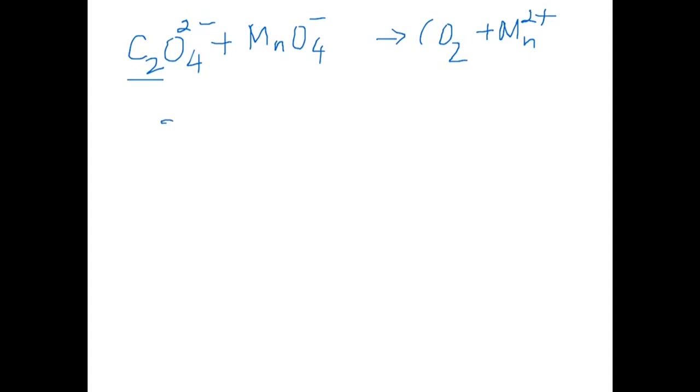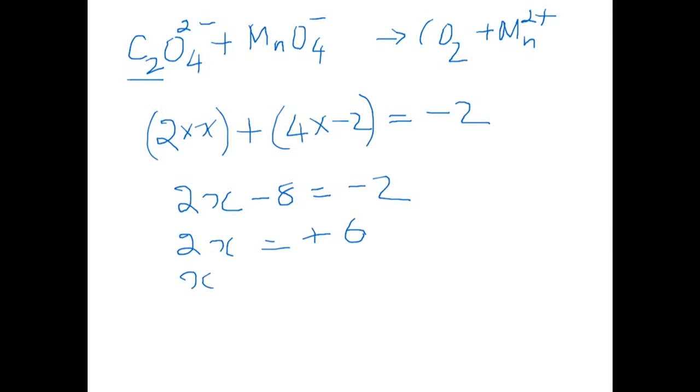There are two carbon atoms, therefore it's 2 times x, the unknown oxidation number, plus 4 oxygens times negative 2, the oxidation number of oxygen. The net charge of the oxalate ion is minus 2, so 2x minus 8 is equal to minus 2, 2x is equal to plus 6, x is equal to plus 3.